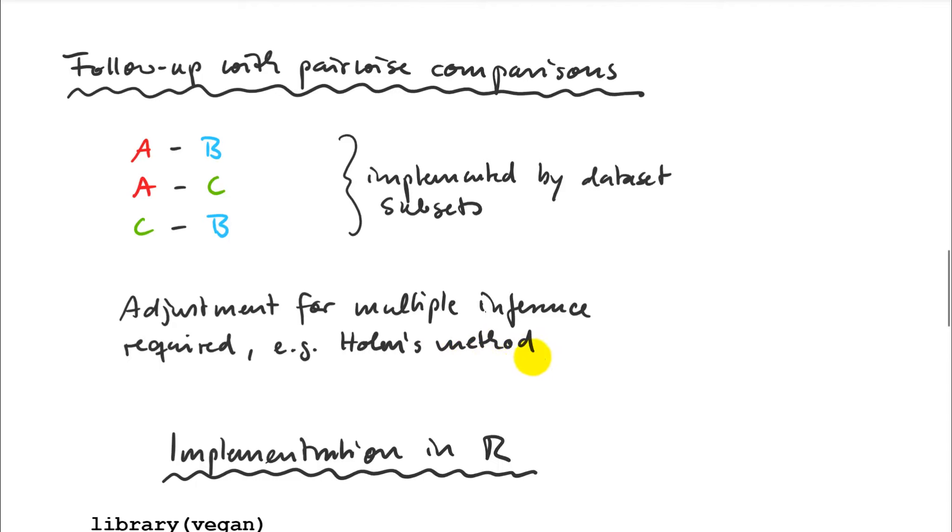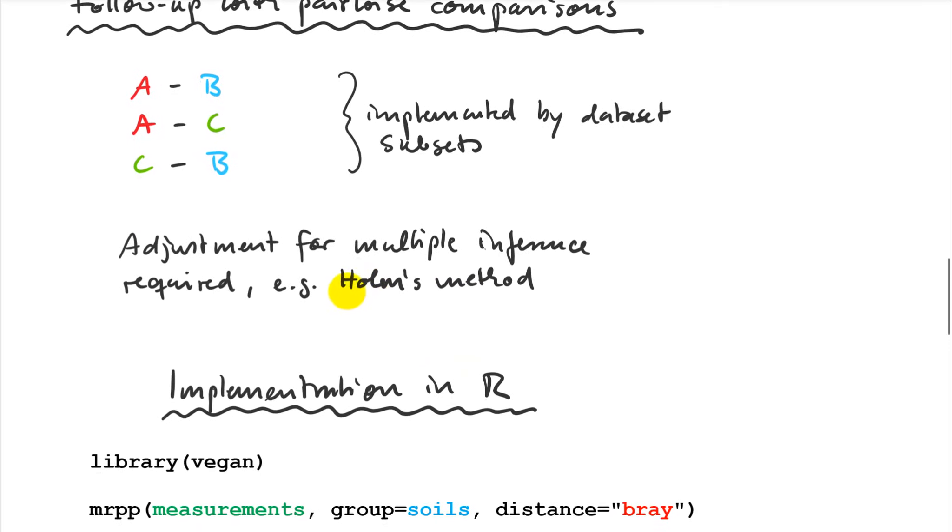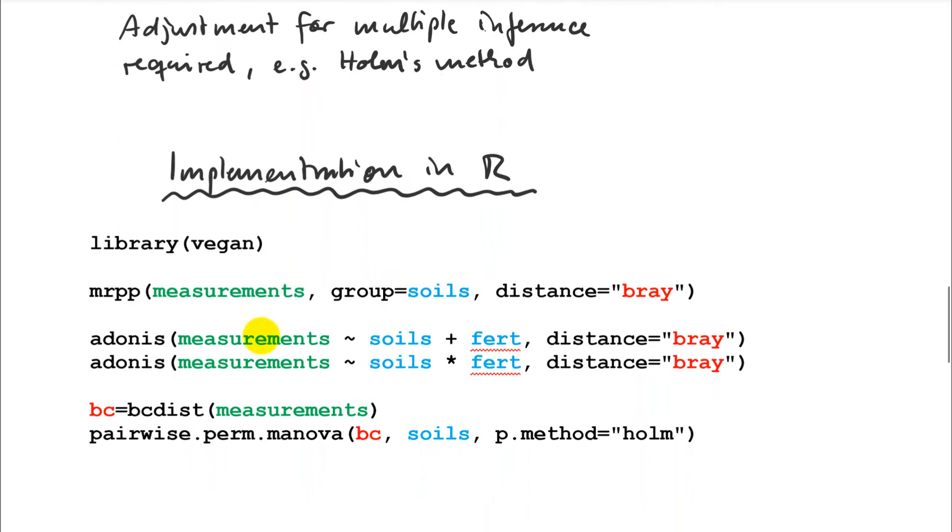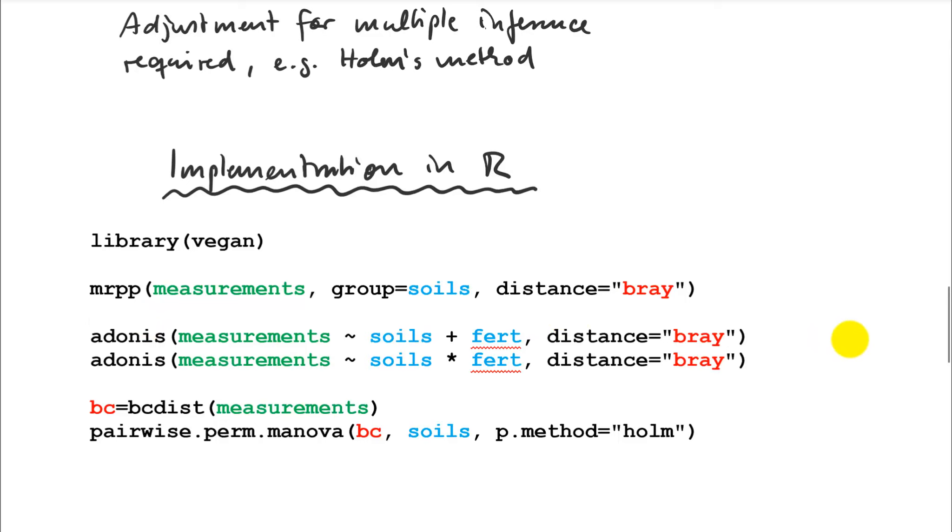If you have three treatments, you generally like to do all possible combinations and see which groups are significantly different from each other. That works very similarly to univariate pairwise comparisons. You have to do an adjustment for multiple inference. I'm not going into this too much because these are well-established univariate statistics methods. You can run this very much like normal analysis of variance. Instead of one variable as your dependent variable, you have a whole table of measurements - multiple species, for example. You have a group variable, in this case soil amendments, and you have to pick a distance measure that we used to calculate our signal-to-noise ratio.